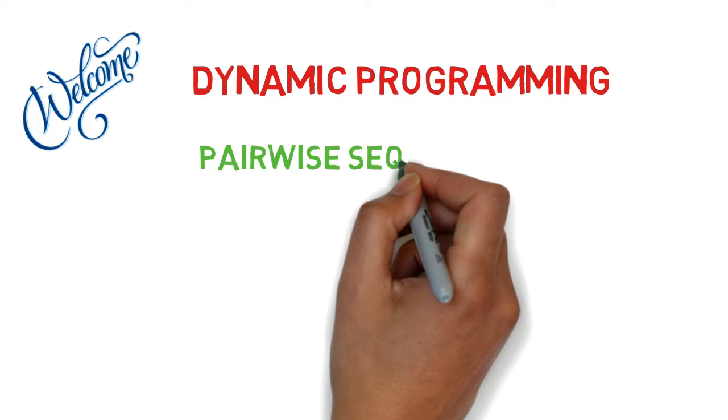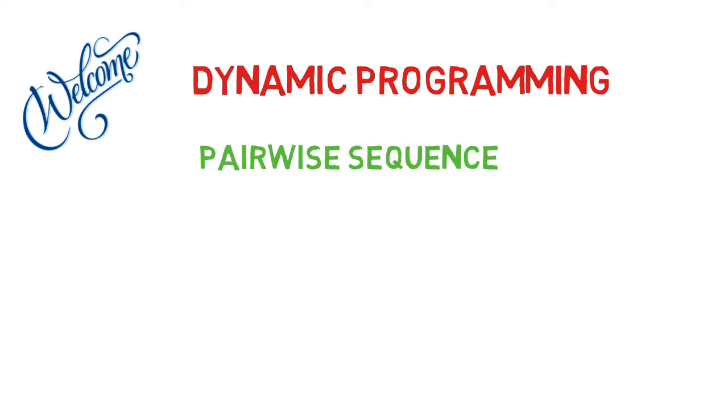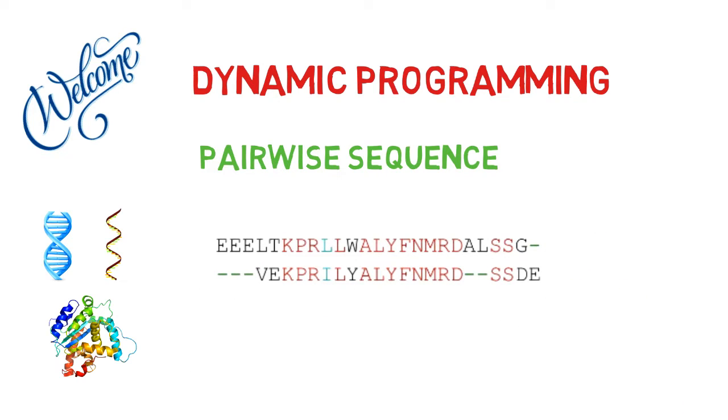We use pairwise sequence alignment when comparing two sequences, be they DNA, RNA, or protein sequences. During this procedure, we slide two sequences on top of one another to maximize their similarity. In order to further this, we introduce the insertion, deletion, and gap penalties. This was the rationale behind the pairwise sequence alignment.